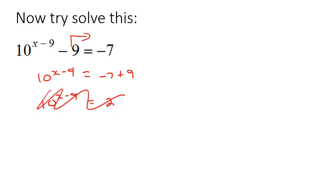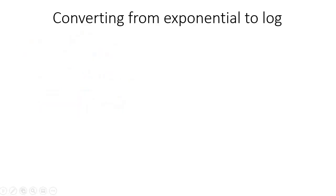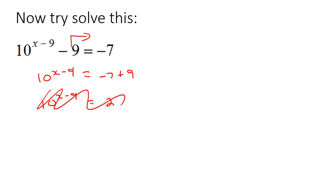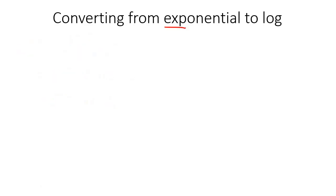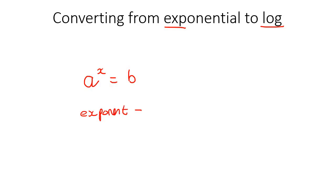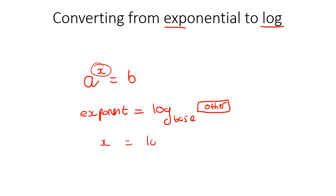I'm going to show you how to convert from exponential form to log form. If you have a to the power of x equals b, that is exponential because there's a variable in the exponent. To turn that into a log, you take the exponent first, then make that equal to log of whatever the base was. The base is the number that was with the exponent, and the other number goes on the end. So: x equals log base a of b.